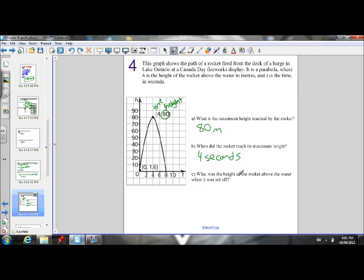This question also asks us what was the height of the rocket above the water when it was set off? So look back to the beginning. This point is labeled. When our time is 0, it was set off when time was 0. So the height is 1.6. Remember, that's our time. And the y-coordinate is our height. So it was set off at a time of 0. The height was 1.6. So the height of the rocket above the water when it was set off was 1.6 meters.